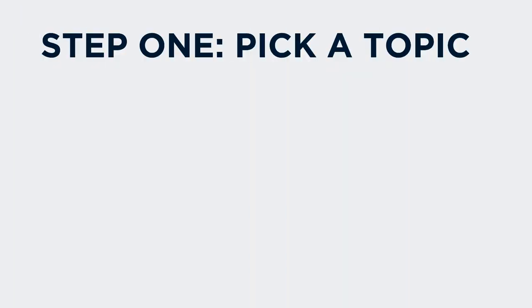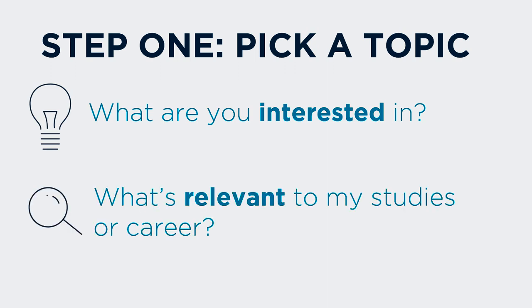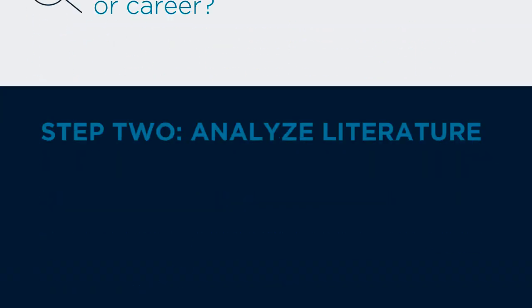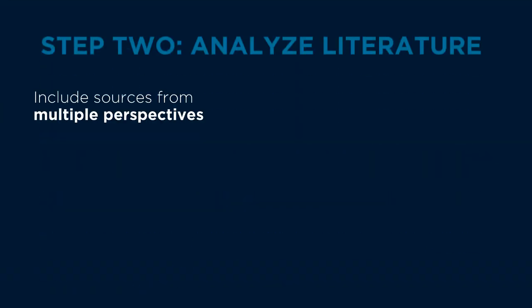To conduct a literature review, you must first determine your topic, though you might need to revise or narrow your topic along the way. Ask yourself, what are you interested in? What is relevant to my studies or career? Then you find and analyze the literature, making sure you're looking for sources from multiple perspectives.